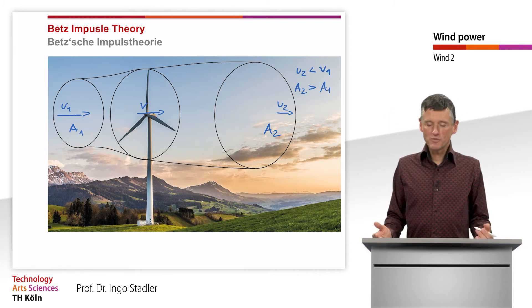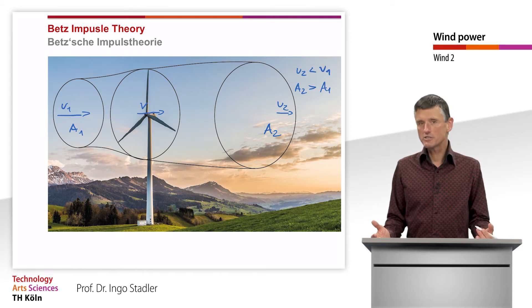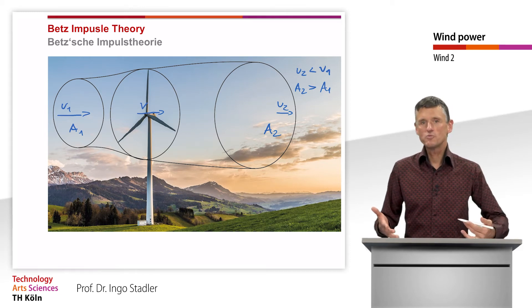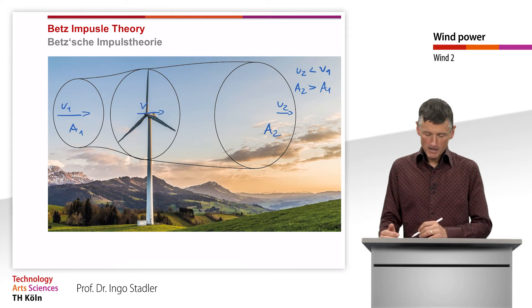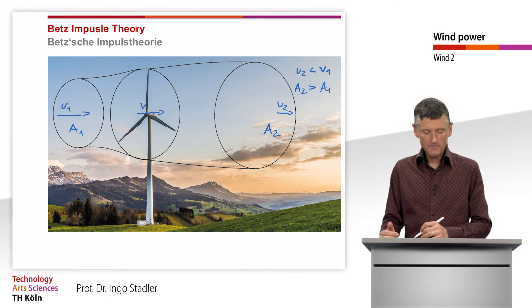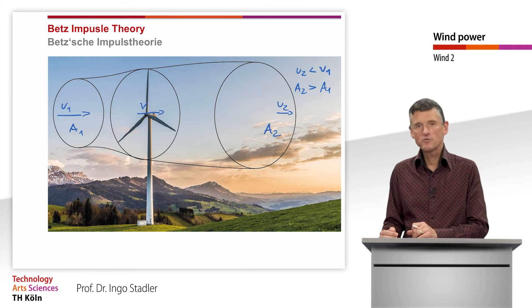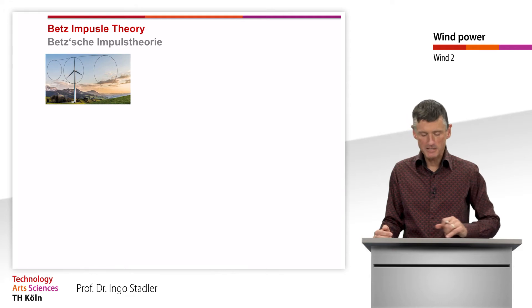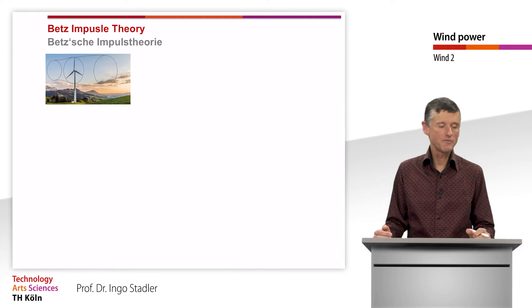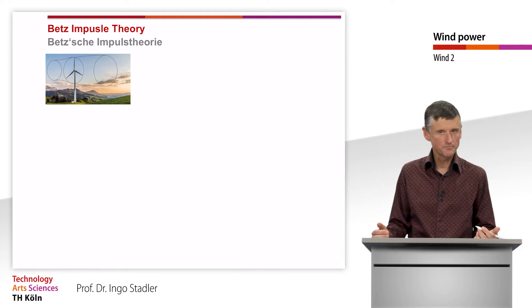The first one who had a look at this question — how much power we can extract from the wind by a wind turbine — was Betz. According to him, the impulse theory is called the Betz impulse theory, and we would like to have a closer look at it.